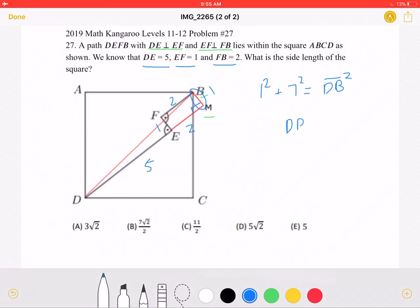So DB squared must be equal to 50, so the length of line segment DB must be 5 square root of 2.